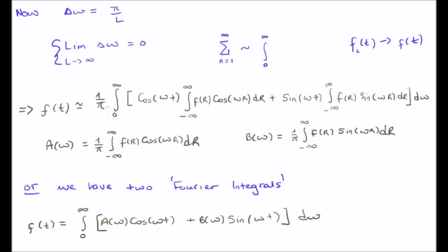But we've now gone from discrete Fourier series to continuous Fourier integrals, where the integrals calculating a of omega and b of omega stretch from minus to positive infinity, whereas the outer integral stretches only from 0 to infinity.